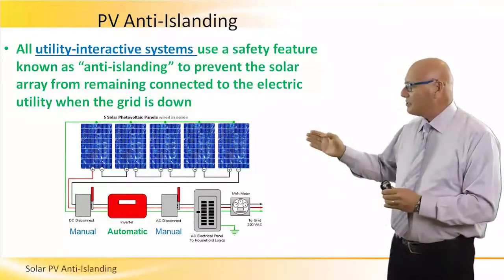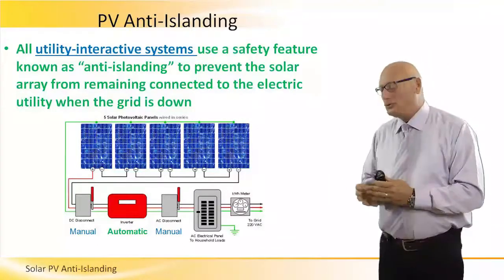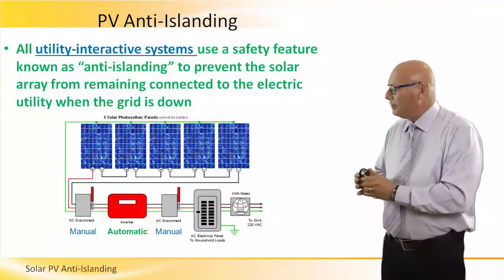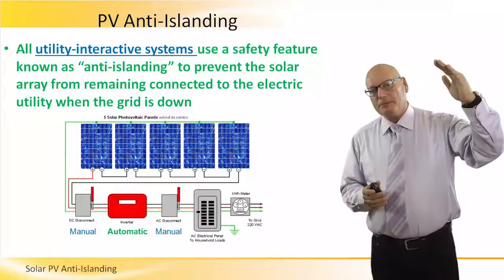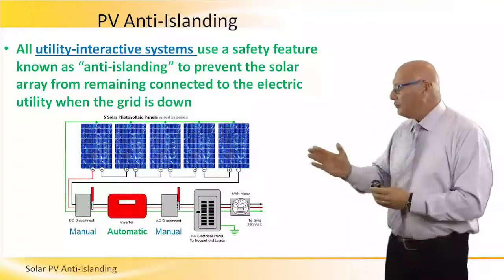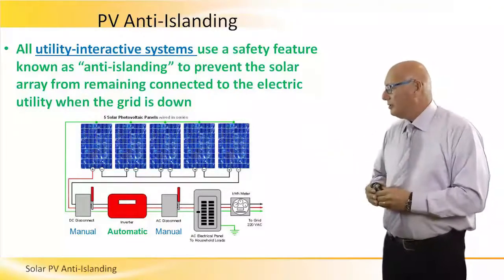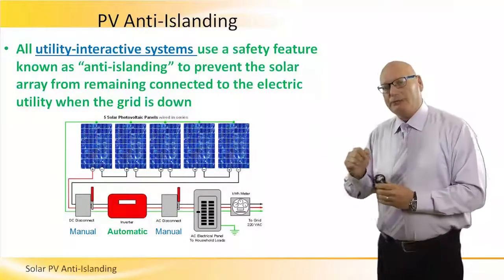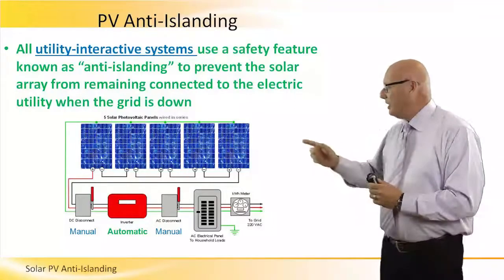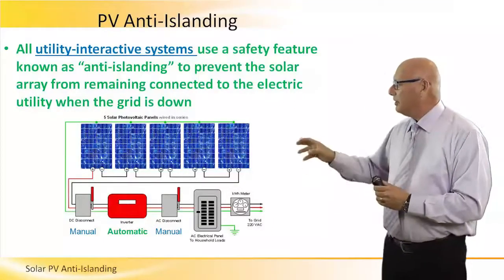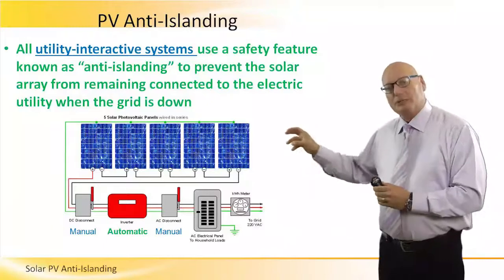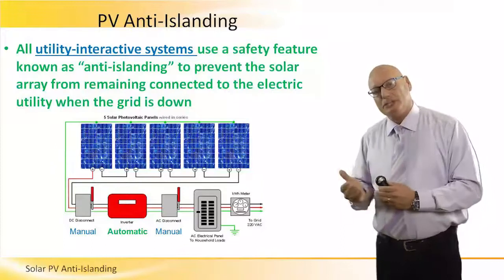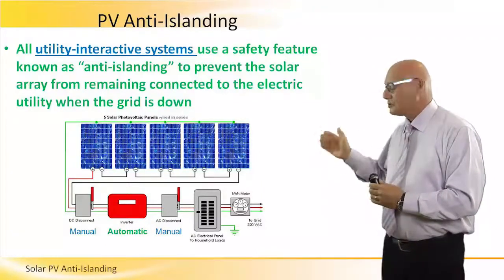On the right side is the manual AC disconnect. Its job is to split between the PV system as a whole and the grid on the right. If we switch it on manually, we provide electrical energy to the distribution and junction box, and from there it goes to a meter and then to the grid.